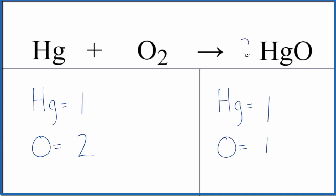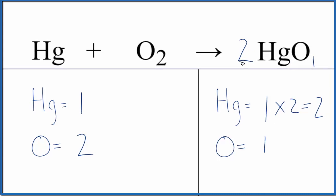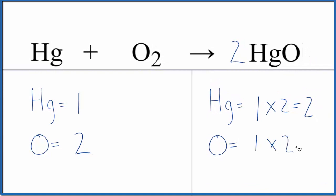It looks like if we put a 2 as our coefficient in front of the HgO, the 1 times the 2 would give us 2, and then the 1 oxygen times 2, that would give us 2.